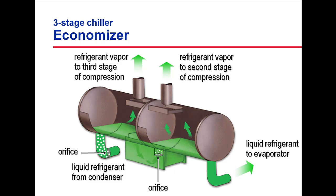Liquid refrigerant from the condenser enters the first orifice expansion device, which reduces the pressure of the refrigerant to that of the third stage impeller inlet. This pressure drop causes a portion of the liquid refrigerant to flash, and the resulting mixture of liquid and vapor enters the high-pressure chamber of the economizer.